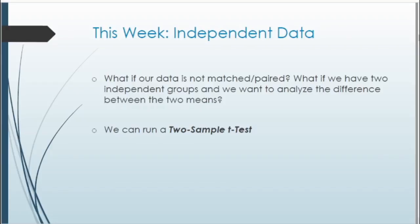Now this week, with our independent data: what if our data is not matched or paired, and instead we just have two independent groups, and we want to analyze the difference between these means? In this case, we can run a two-sample t-test. With two independent samples, instead of pairing particular observations and finding the mean of the differences, we first find the averages of those two groups separately, and then find the difference between those means.